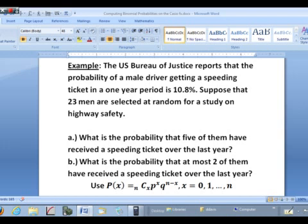In Part A, it asks, what is the probability that five of them have received a speeding ticket over the last year? In other words, the probability that X is exactly five. Well, let's take a look here.